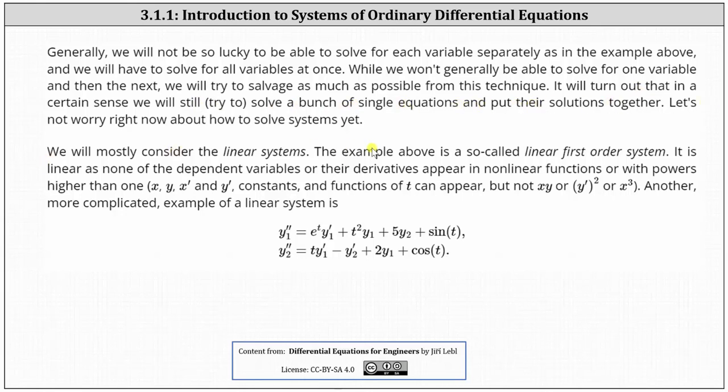We will mostly consider linear systems. The example above is a linear first-order system. It is linear as none of the dependent variables or their derivatives appear in nonlinear functions or with powers higher than 1. x, y, x prime, and y prime constants and functions of t can appear, but not x times y or the square of y prime or x cubed. Another more complicated example of a linear system is shown below. I hope you found this introduction helpful.